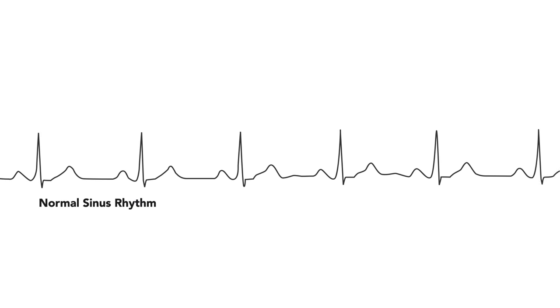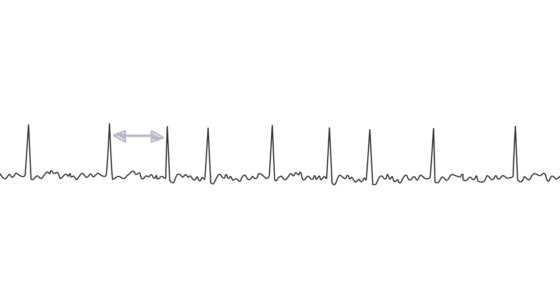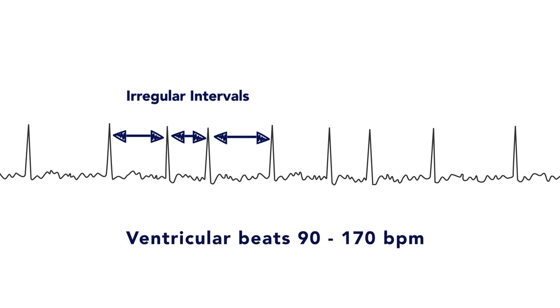Compared to normal sinus rhythm, where there is normal interval between each ventricular response, in atrial fibrillation you'll often see ventricular response occurring at irregular intervals, often leading to variable ventricular beats ranging from 90 to 170 beats per minute.